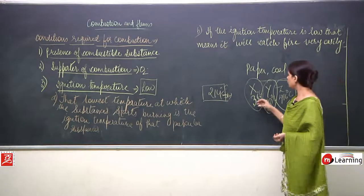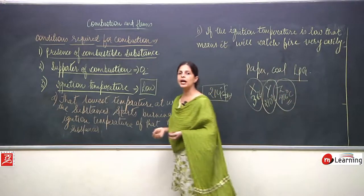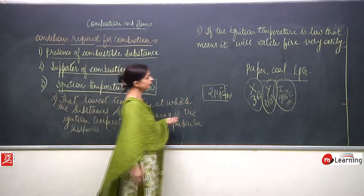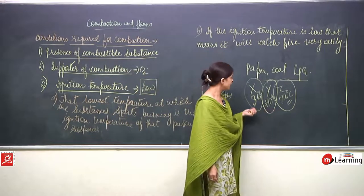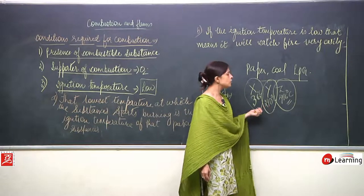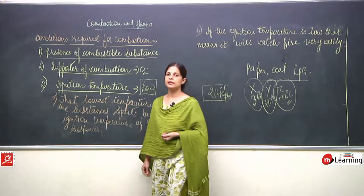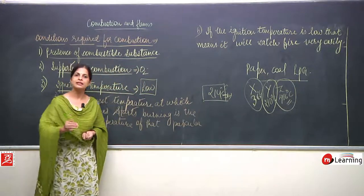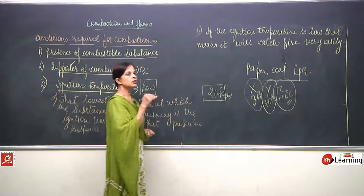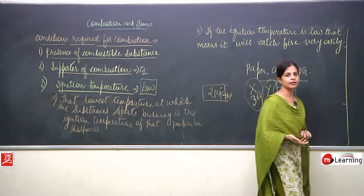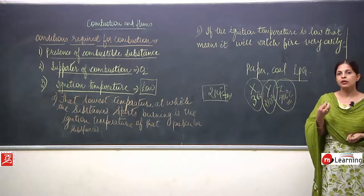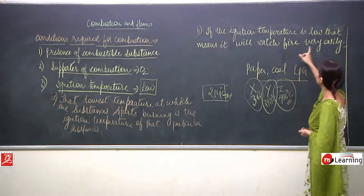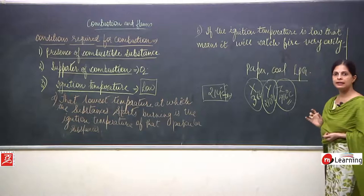These temperatures are the ignition temperatures — the minimum temperature required for a substance to burn. If the ignition temperature is low, the substance catches fire more easily. Among X, Y, and Z, substance X with 36°C has the lowest ignition temperature, so it will catch fire first and burn the fastest.